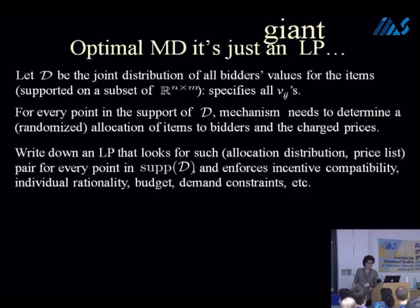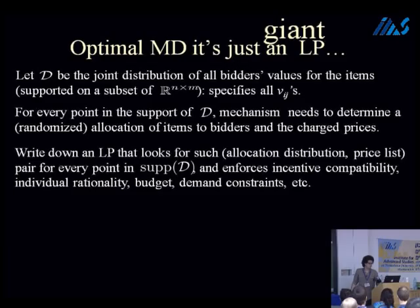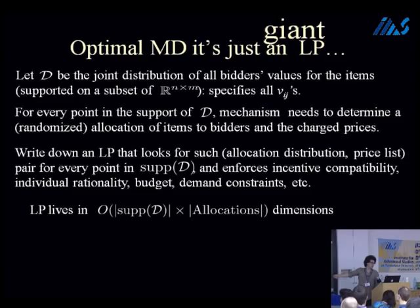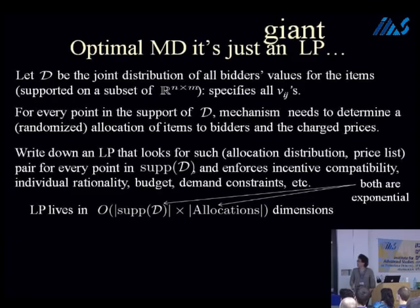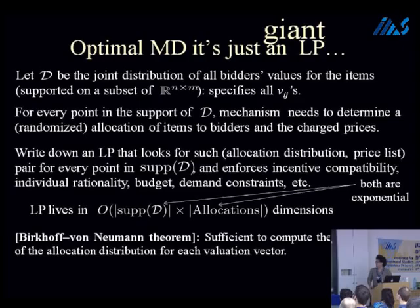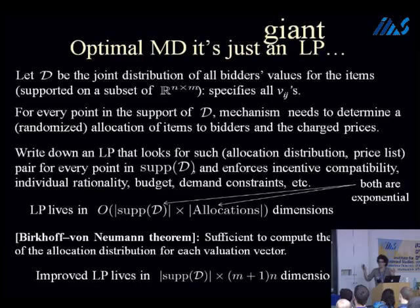Using the Birkhoff–von Neumann theorem, one can write the same LP but look only for the marginals of the allocation distribution to the bidders. That reduces the size of the LP to support-size times polynomial dimensions. The bottleneck is the support of the distribution. For the settings I talked about, unfortunately, the support is exponential — so we have to understand something about the problem to go forward.